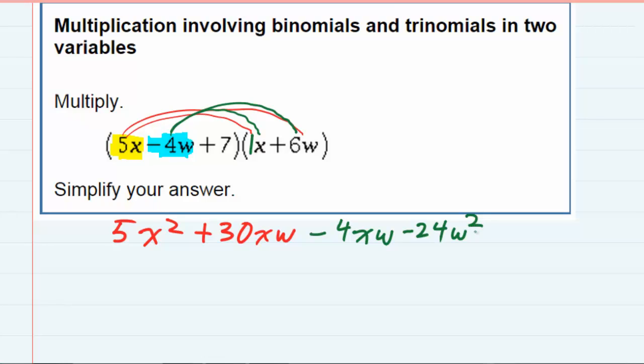We still have the 7 in the first term, and that also needs to be distributed. 7 times x is 7x, and 7 times 6w: 7 times 6 is 42. They're both positive, and there's still the w there, so 7 times 6w is 42w.